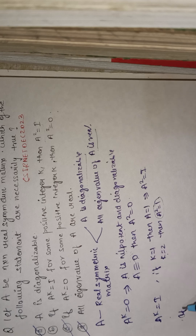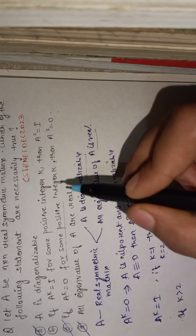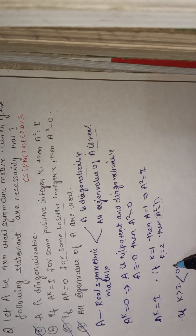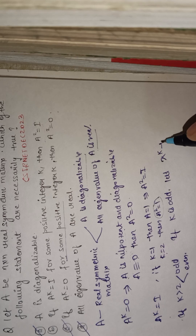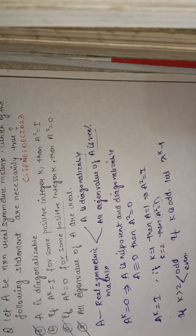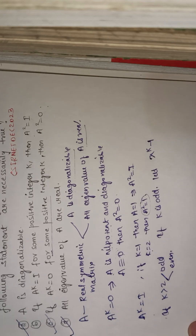If k is greater than 2, it can be odd or even. If k is odd, let x^(k−1) be the annihilating polynomial of this matrix A. The annihilating polynomial is a polynomial which, when applied to A, gives zero. We consider what the minimal polynomial is in this case — only 1 is a real eigenvalue; other eigenvalues are imaginary.